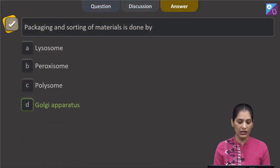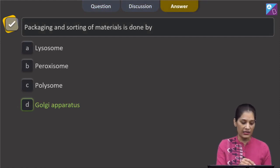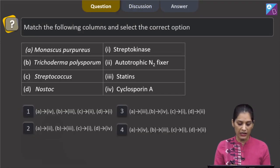The correct option for the given question is option D which says Golgi apparatus. Let's pick up the next question.